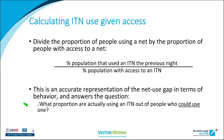The ratio of ITN use to ITN access is the indicator that narrows down into the behavioral aspect of net use. We don't care about people who can't use a net because they don't have one — as SBCC practitioners, we can't help them without getting them a net first. But we do care about the proportion of people using a net among those who could. The way we get this indicator is simple: divide the percent of the population that used an ITN the previous night by the percent with access to an ITN.